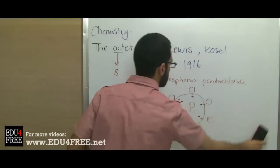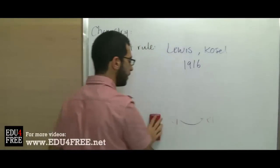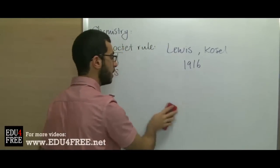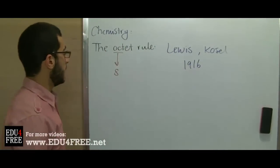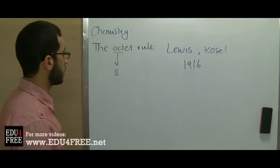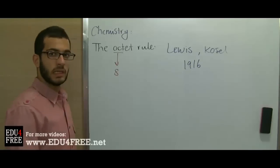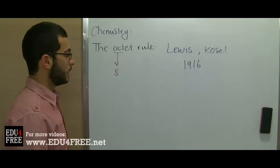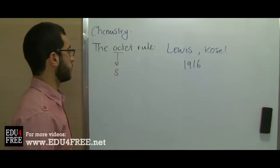The second failure is that this rule doesn't explain the real nature of the covalent bond because the covalent bond is not just sharing electrons. It doesn't explain the stereo structure of the molecule, the 3D structure, and it doesn't tell the angles between the covalent bonds between atoms.